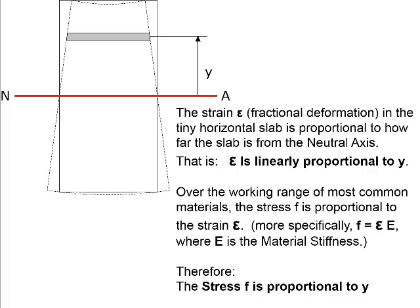We've also talked about basic properties of materials. Over the working range of most common materials, the stress F is proportional to the strain, or in other words proportional to the fractional deformation. The equation we use is stress equals strain times uppercase E, which is the stiffness of the material. Clearly the stiffer the material, the more stress we need to achieve a given amount of strain. So since F is proportional to epsilon and epsilon is proportional to y, it follows that F is proportional to y.